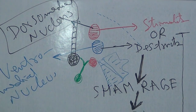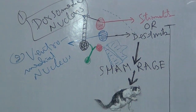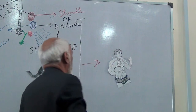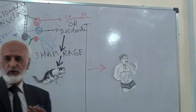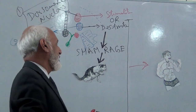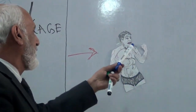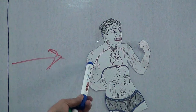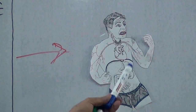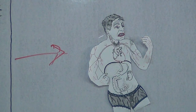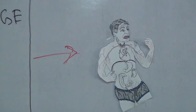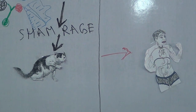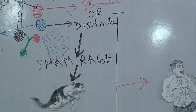In animals and similarly in human beings, the features include: eyelids open, pupils dilated, flushing of the face, increased heart rate and pulse rate, vasoconstriction to divert more blood to the brain and heart. These pictures explain the conditions seen in sham rage reaction.